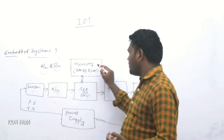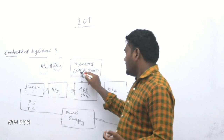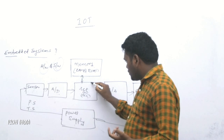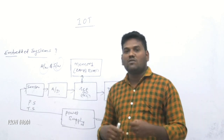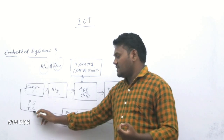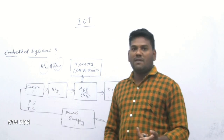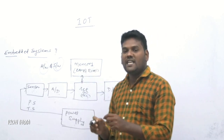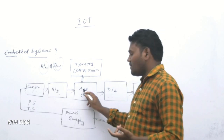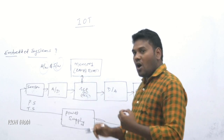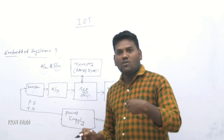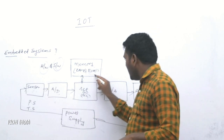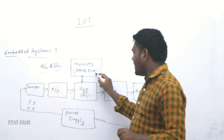Here we have the memory — this is very important from a software point of view. RAM, random access memory, is a storing element. Whenever we give some instructions to the microprocessor or microcontroller — suppose we write a program for a temperature or pressure sensor in C programming language — we store that in RAM. ROM, read-only memory, is used for reading data from your microcontroller.